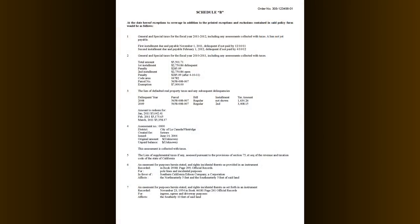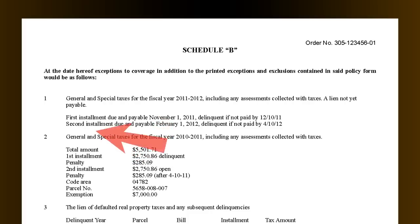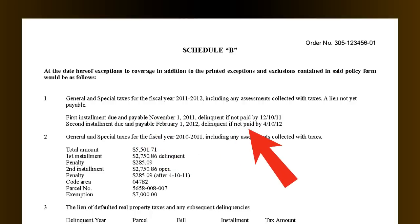Moving on to Schedule B of the preliminary title report, we start with item number one, which is property taxes. The property tax fiscal year runs from July 1st to June 30th. Property is taxed as of January 1st for payment in the following fiscal year. Note the installment due dates shown below — you can see those in your first and second installments.